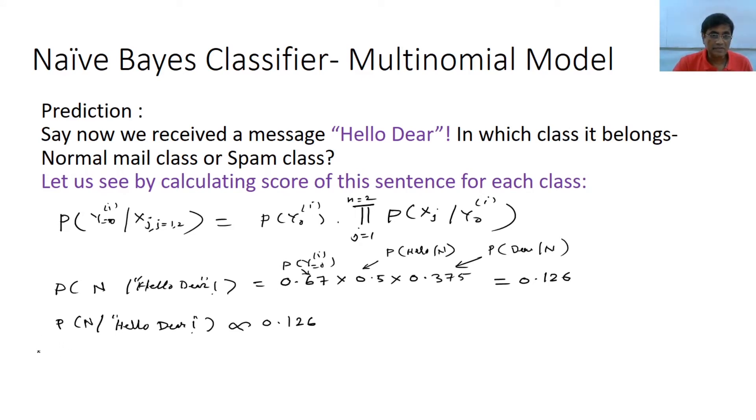So during conversation we are just giving you some important concepts. Similarly what you will have to do, you will have to calculate that what is the score of this "Hello Dear" in spam class. Still I am writing all this knowing fully that it has no meaning. So you will have to calculate 0.33 into, you will see perhaps it was 0.25 and then 0.1, which turned out to be 0.0083.